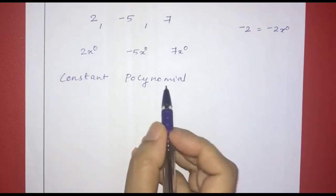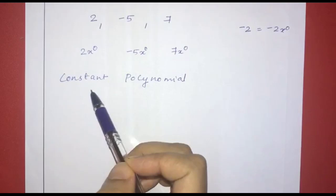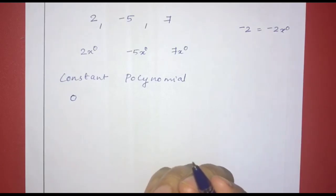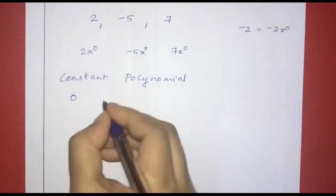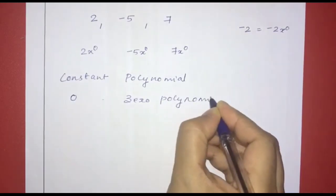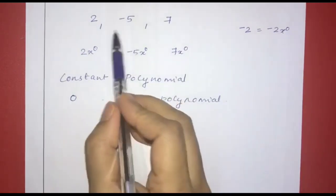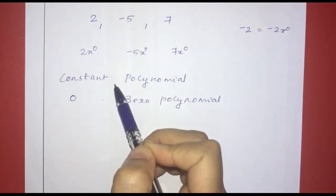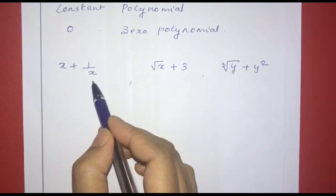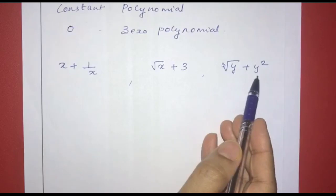That is called a constant polynomial. If we look at zero, that is also a polynomial. For example, consider x plus 1 by x, root x plus 3, and cube root of y plus y squared. These are examples we need to examine.